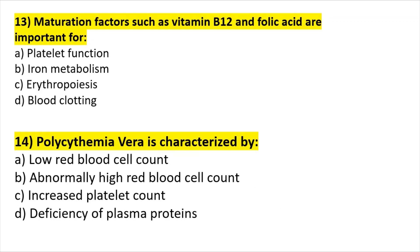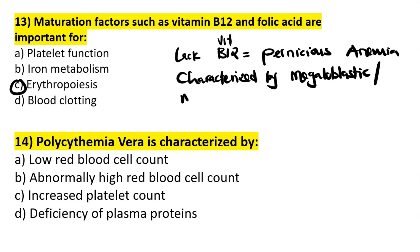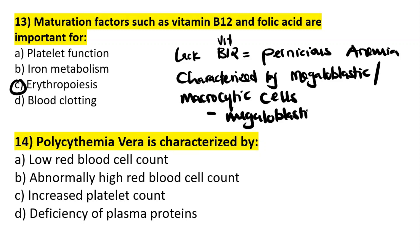Maturation factors such as B12 and folic acid are important for erythropoiesis — the maturation and growth of red blood cells require vitamin B12. A lack of vitamin B12 will cause pernicious anemia, which is characterized by megaloblastic cells — also called macrocytic cells, meaning big cells. This is also referred to as megaloblastic anemia, a very important concept you will find in your test.